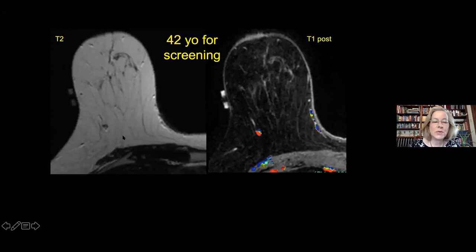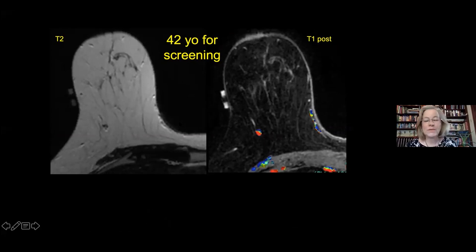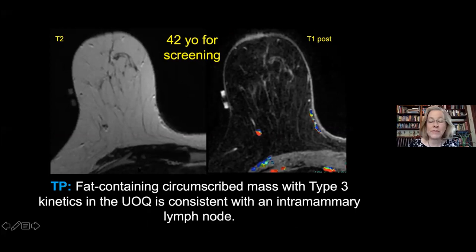Another 42-year-old patient: on T2 there's a small mass with a darker rim and higher signal center, showing a mixed kinetic pattern on the kinetic map. You could correlate this with her mammogram—this is just an intramammary lymph node. Intramammary lymph nodes often have type three or washout kinetics, so you don't need to biopsy every lesion with suspicious kinetics. You really need to correlate with other features you're seeing on the sequences.